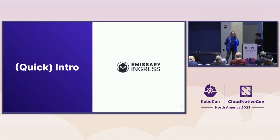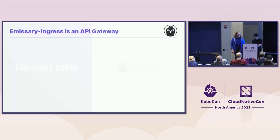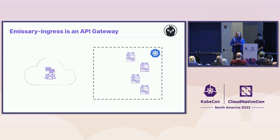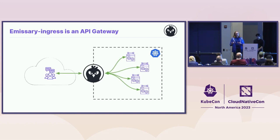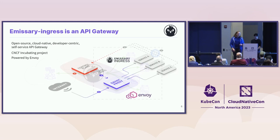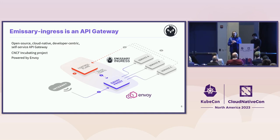Quick show of hands — who here is new to Emissary Ingress? Got a few hands, so we're not going to skip the intro. Emissary Ingress is an API gateway. If you have a cluster full of microservices and your users are outside your cluster, you need something to allow them to reach into your cluster to see your services from outside, because one of the points of a cluster is to protect you from exactly that. You throw in an API gateway to both allow this and control it. Emissary Ingress is an open-source, cloud-native, developer-centric, self-service, opinionated API gateway. It's a CNCF incubating project powered by Envoy — Envoy wrangles all the user's data, and Emissary wrangles the Envoys.